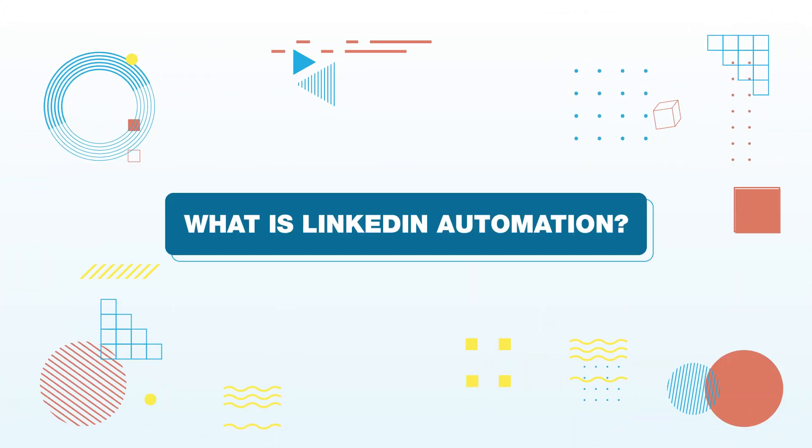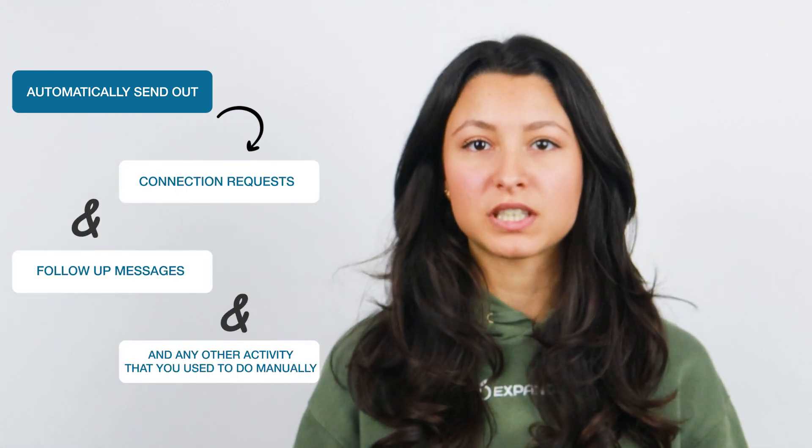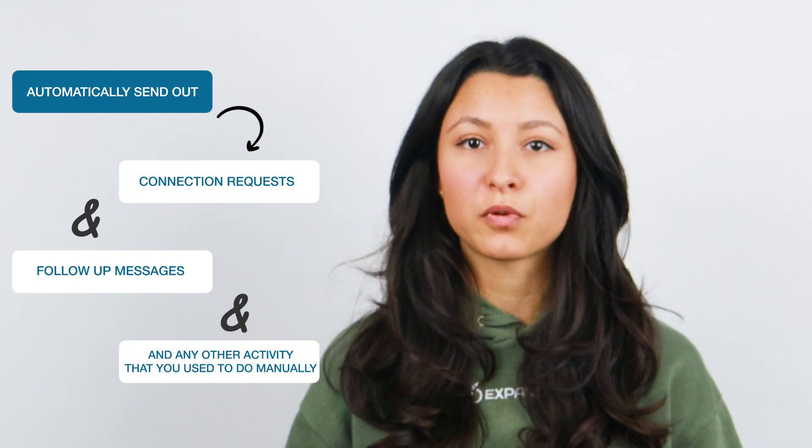So what is LinkedIn automation? The concept behind LinkedIn automation is that it basically involves the use of different tools that not only automate repetitive tasks but do a lot of intelligent tasks too. It refers to using automation tools that can automatically send out connection requests, follow-up messages, and any other activity you would otherwise have to perform manually — including building your lists, viewing profiles, and your first outreach, which is often a connection request or a short message.